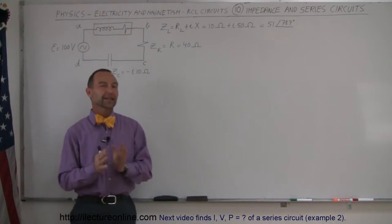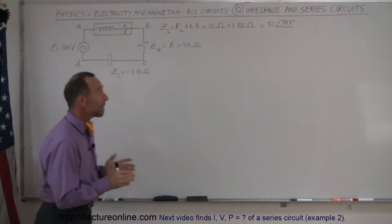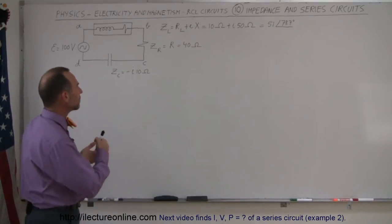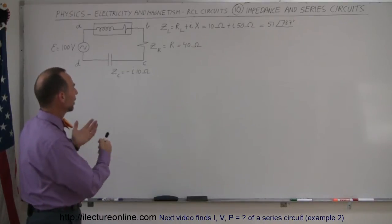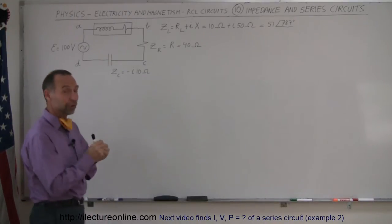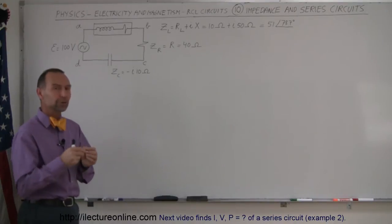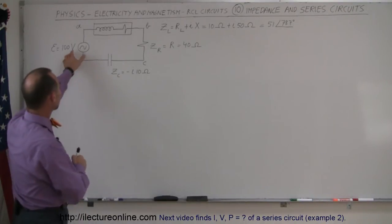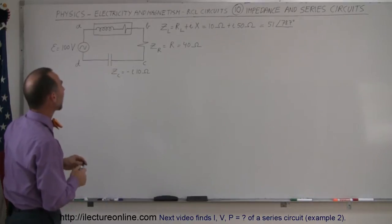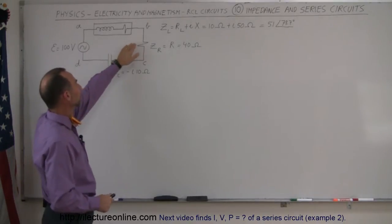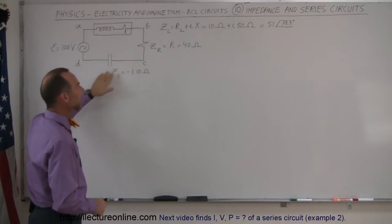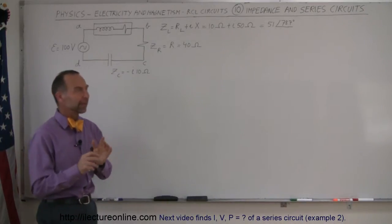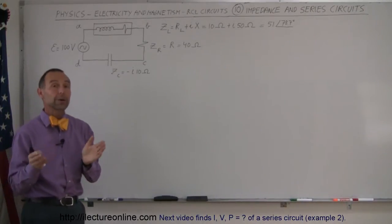Welcome to our lecture. Now that we've mastered the ability to express the impedance of circuits with complex numbers, we're going to do an example where we use a voltage source that varies with time. We'll have an inductor, a resistor, and a capacitor in a series circuit. We'll do the series circuit first because it's easier to work with, and then we'll do a parallel circuit for comparison.